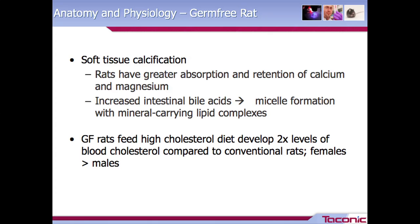A key difference between the germ-free mouse and rat: the germ-free rat does have soft tissue calcification. Rats have greater absorption and retention of calcium and magnesium, resulting in soft tissue calcification. They also have increased intestinal bile acids. Importantly, when fed a high cholesterol diet, the germ-free rat develops two times the levels of blood cholesterol compared to the conventional rat, and this is seen more so in females than in males.